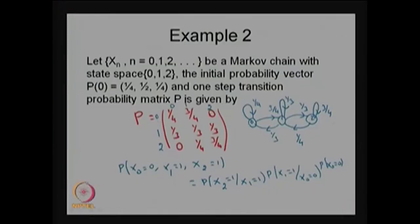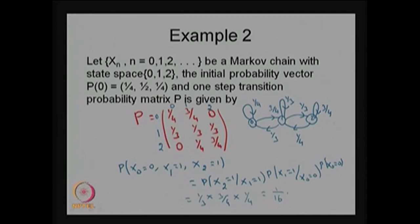From the labeled one-step transition matrix: P(1→1) = 1/3 and P(0→1) = 3/4. From the initial probability vector, P(X0=0) = 1/4. Multiplying these: (1/3) × (3/4) × (1/4) = 1/16. So the probability that the system was in state 0 at step 0, state 1 at step 1, and state 1 at step 2 is 1/16.